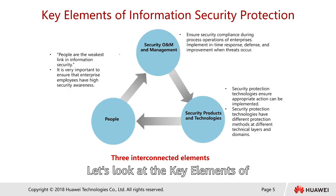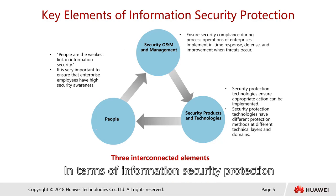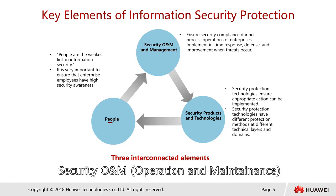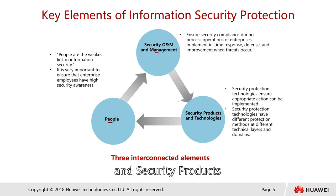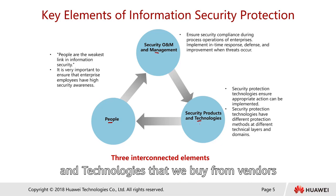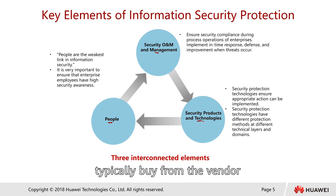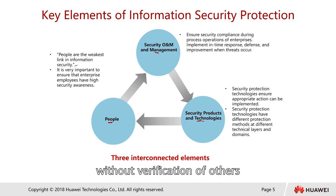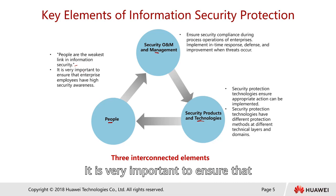Let's look at the key elements of information security protection. In terms of information security protection, there are three areas: people, security O&M management, and security products and technologies. In terms of people, people are the weakest link in information security, because people usually trust others, sometimes without verification, and that could introduce threats into the organization. It is very important to ensure that enterprise employees have high security awareness.